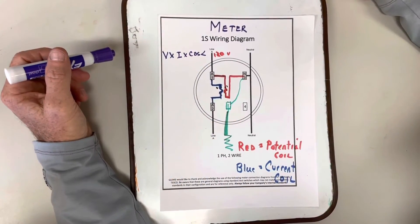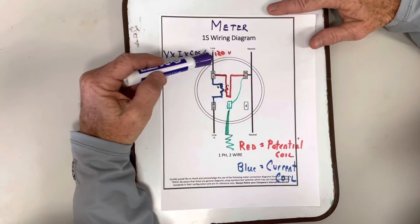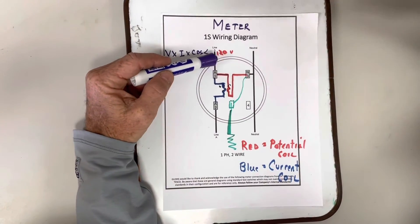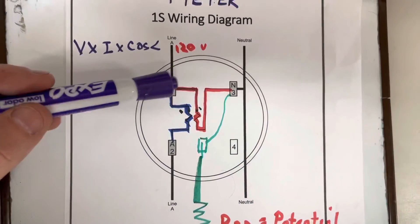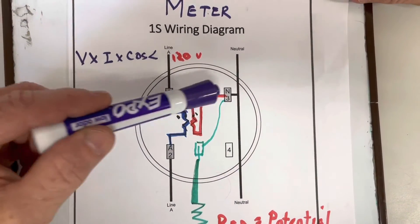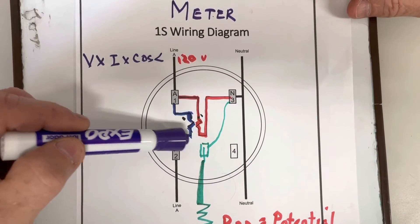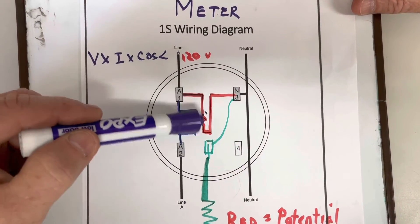And this 1S meter is wired this way. We have a current coil and a voltage coil. This voltage coil is rated for 120 volts. So it needs to go phase to ground. And this current coil is just measuring the current that's going through the meter.